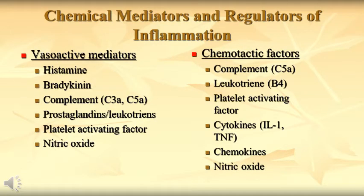What are chemical mediators? Mediators may be produced by cells at the site of inflammation, or may be derived from circulating inactive precursors, typically synthesized by the liver. These could be proteins or any kind of chemical substance which will mediate, control, or regulate the process of inflammation. Mostly, mediators bind with receptors on different cells to interact through the procedure.